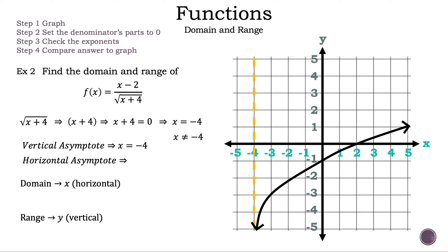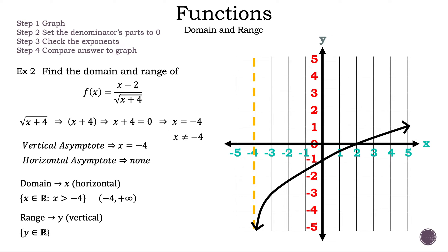Now let's find the horizontal asymptote. We need to look at the powers in the numerator and the denominator. The power in the numerator, which is one, is less than the power in the denominator, which is one and a half. We don't have a horizontal asymptote. Now let's write down the domain. We can write it as x is an element of all real numbers such that x is greater than negative four. Or using interval notation, we have the unbounded interval of negative four to positive infinity. Now let's write down the range. We can write it as y is an element of all real numbers, or using interval notation, the unbounded interval of negative infinity to positive infinity. That is the domain and range of our function. That is example two.